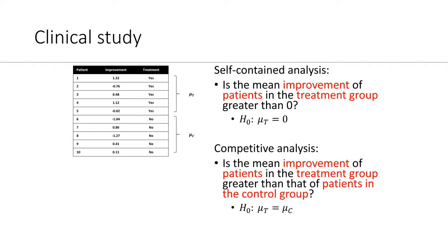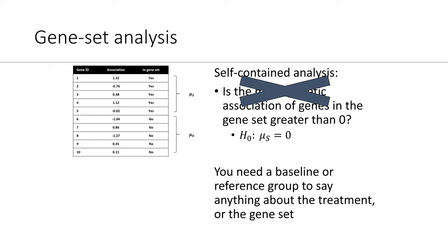Compare this with a randomized controlled trial. In a self-contained analysis, we would ask whether the mean improvement of patients in a treatment group is greater than zero. In a competitive analysis, you have a control group and ask whether the mean improvement of patients in the treatment group is greater than that of patients in the control group. Everybody would agree that we need a control group; otherwise, we cannot say that the treatment is causing improvement. That's why competitive analysis is the way to go in gene set analysis, and self-contained analyses are not informative for asking whether your gene set is causally associated with your trait of interest. The advice is to never do a self-contained analysis, but always use a competitive gene set analysis.